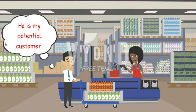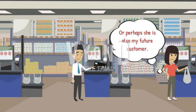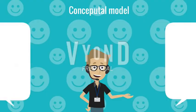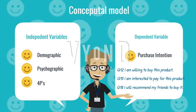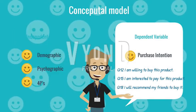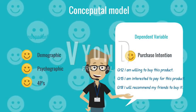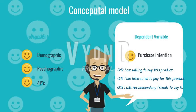Using my self-designed questionnaire, I may find that he is my potential customer, or perhaps she is also my future customer. To measure the reliability of my questionnaire, my dependent variable purchase intention may need more than three parallel questions, such as: I'm willing to buy this product, I'm interested to pay for this product, I will recommend my friends to buy it.